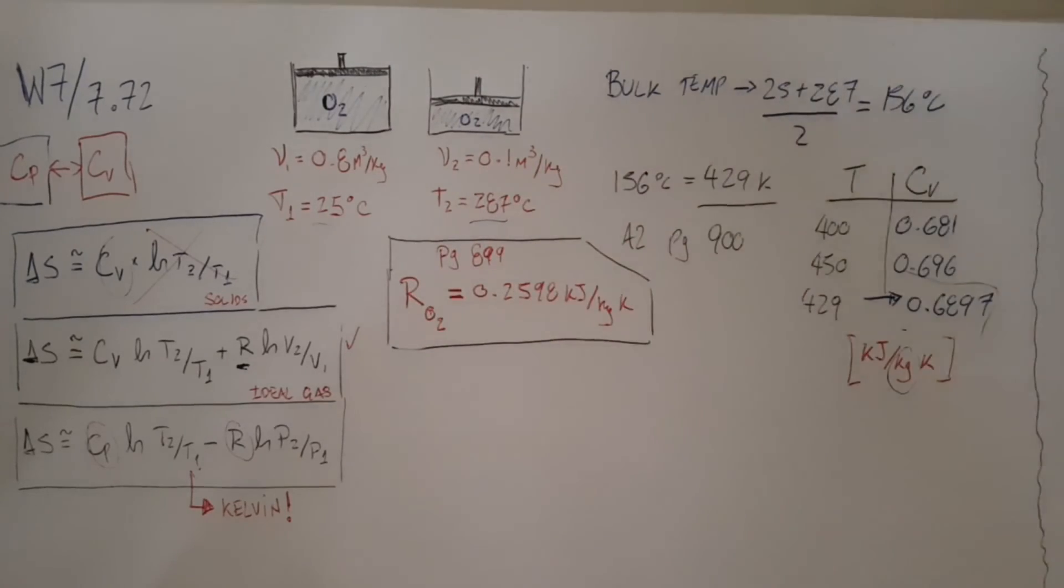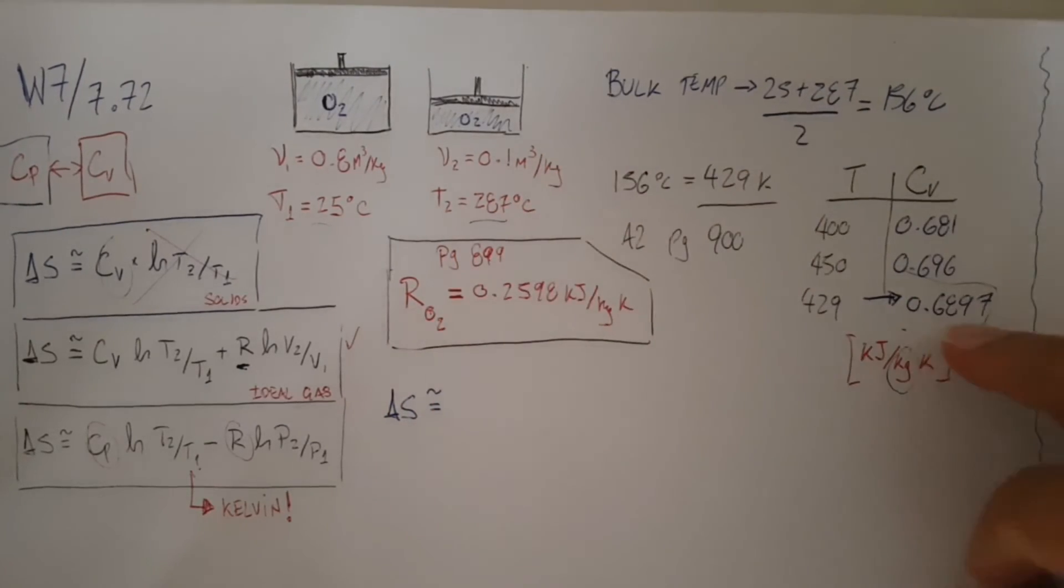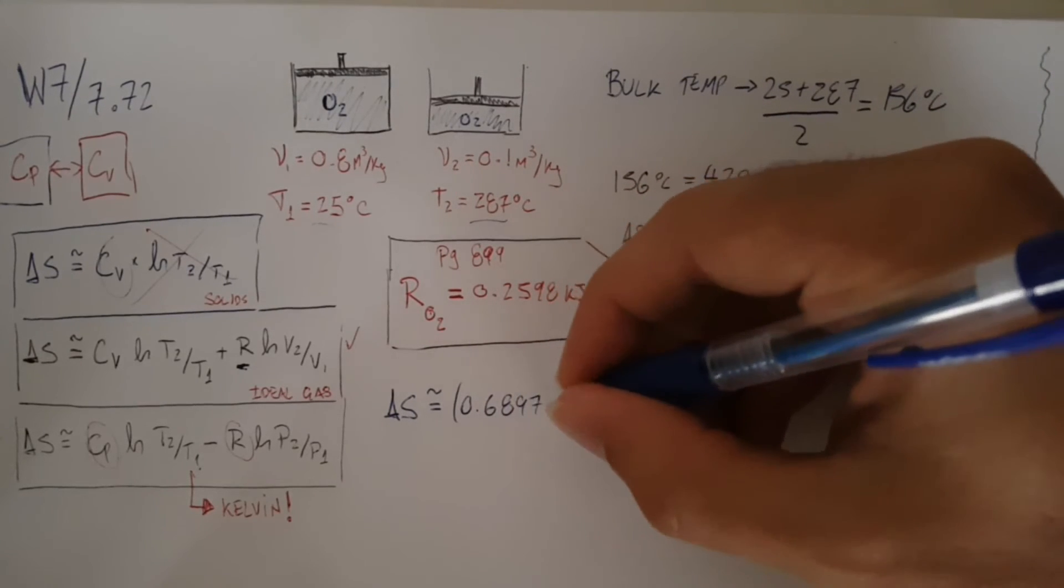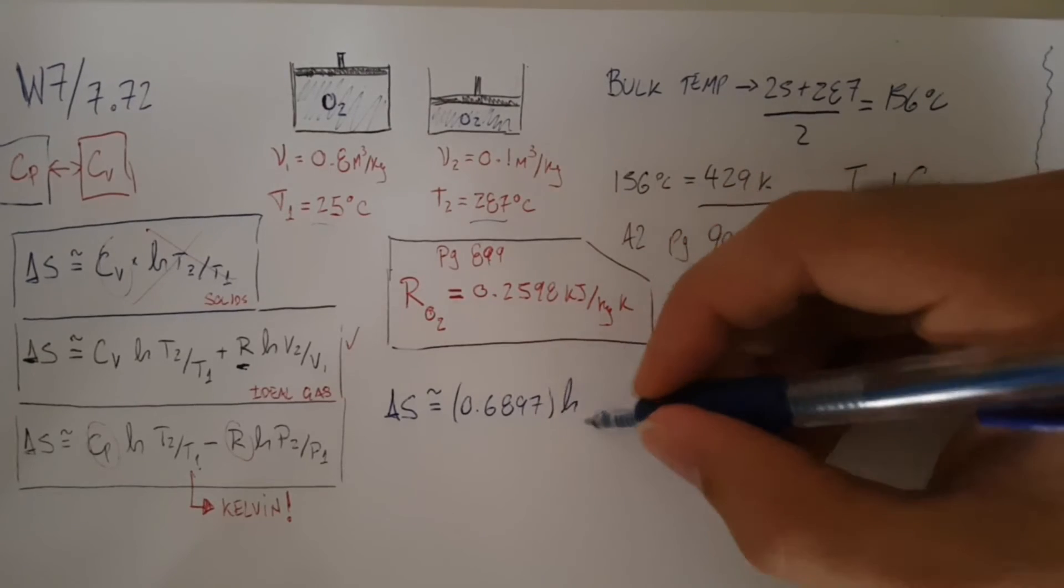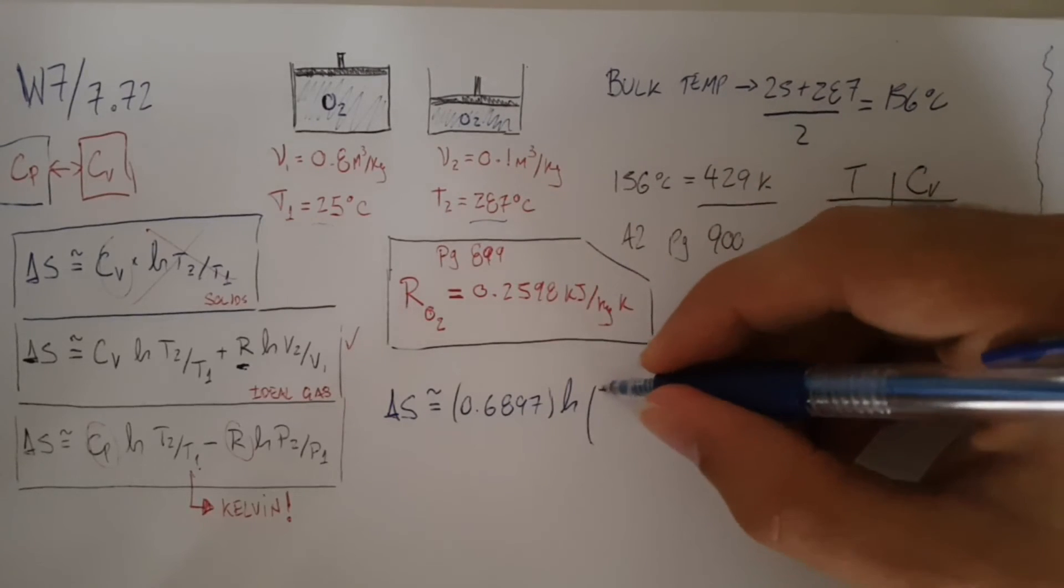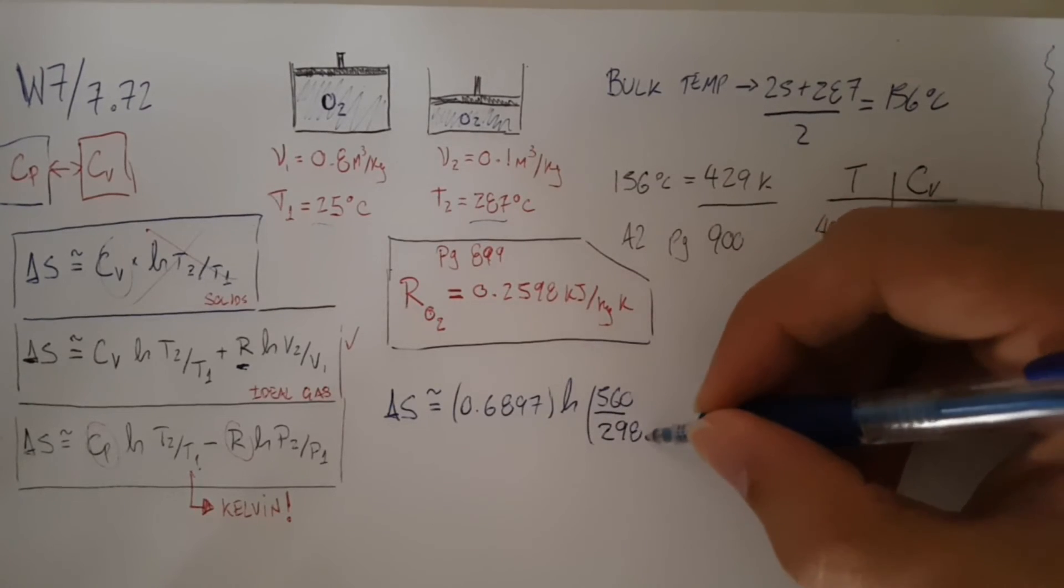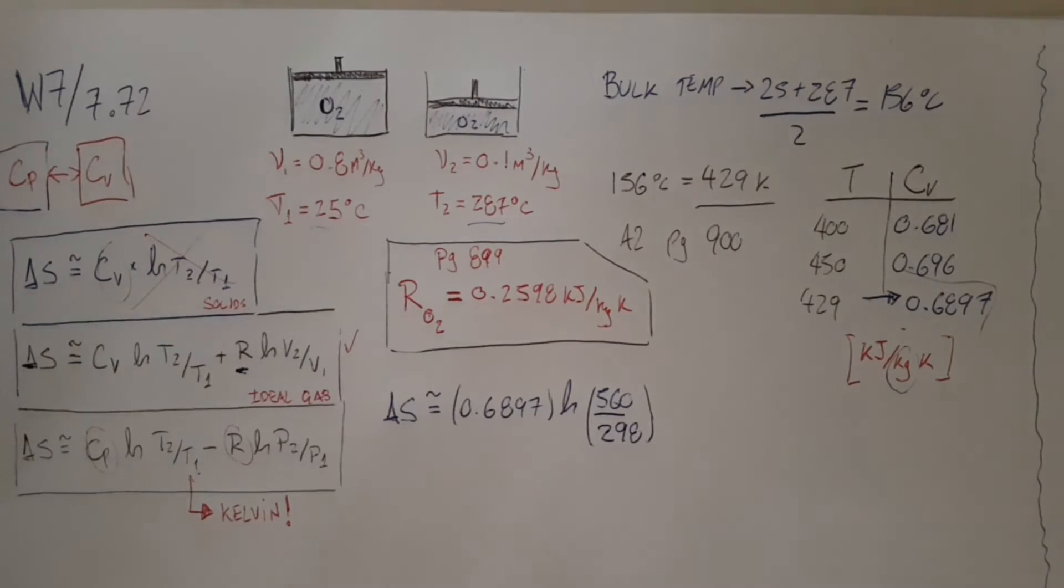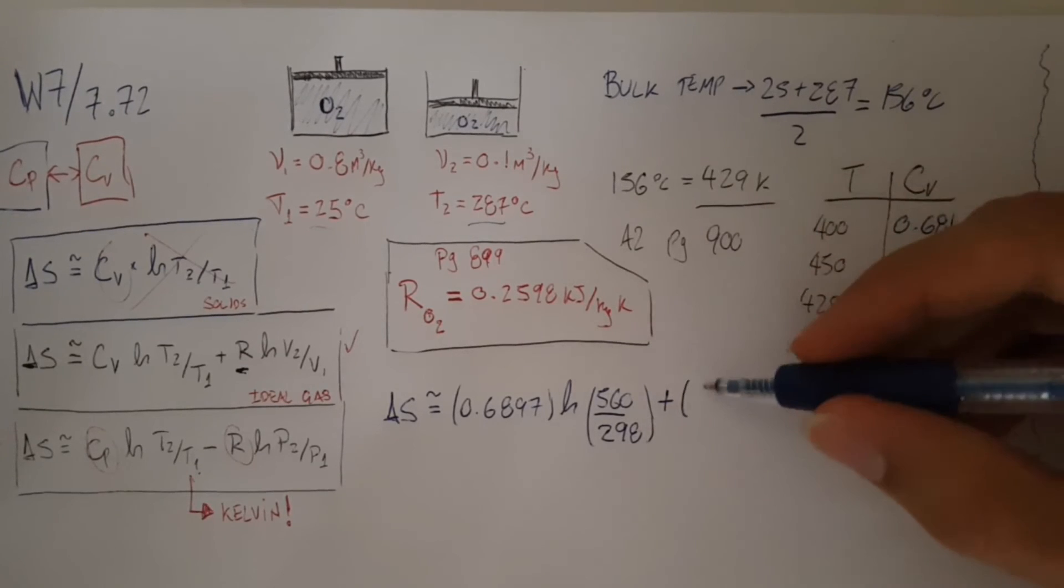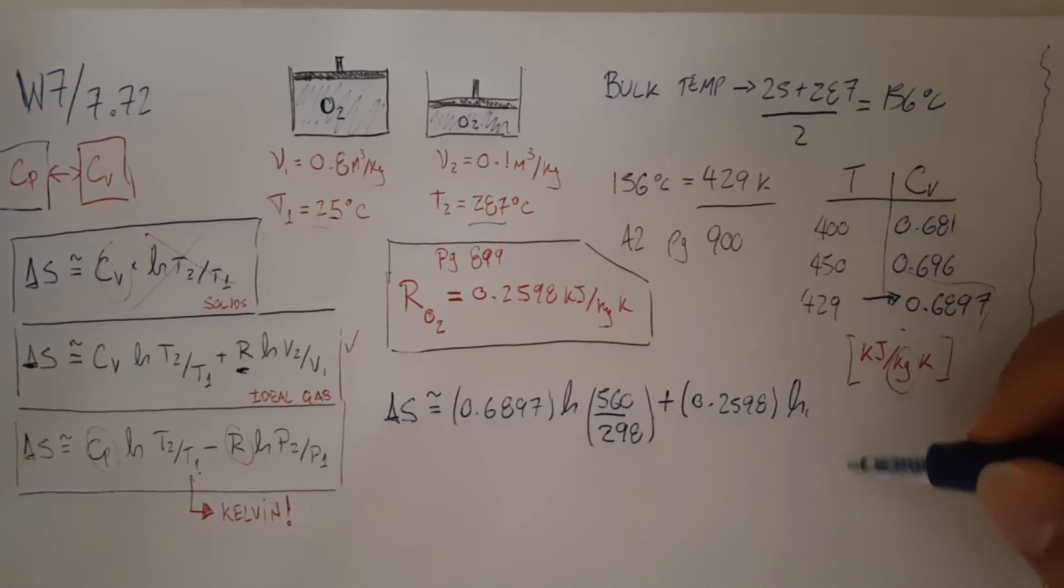My delta S will be approximately my CV, 0.6897, times natural log of T2 over T1. I just need to make sure I'm converting this into Kelvin, so that's going to be 560 divided by 298, plus R which is 0.2598, times natural log...